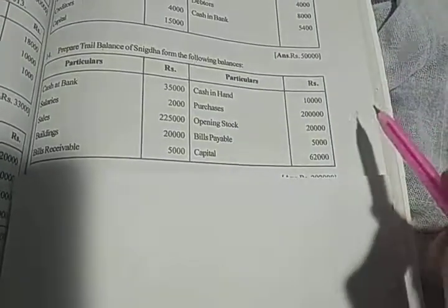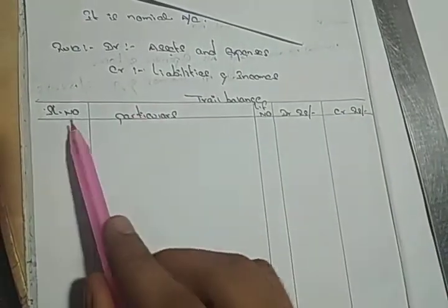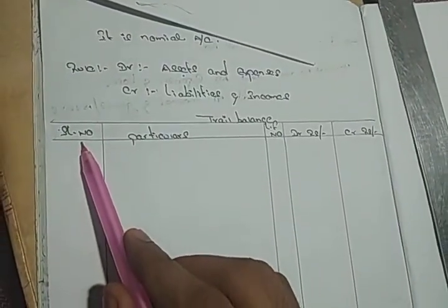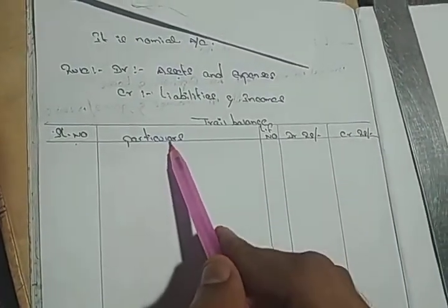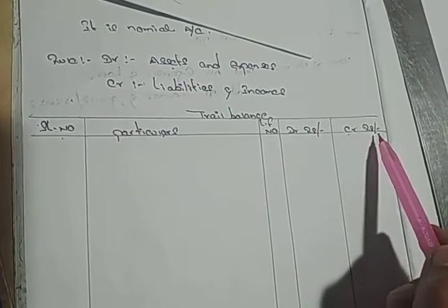Trial balance exam point development, questioning format. Trial balance answer format: serial number, particular, LF number—ledger folio number, DR rupees—debit rupees, CR—credit rupees.